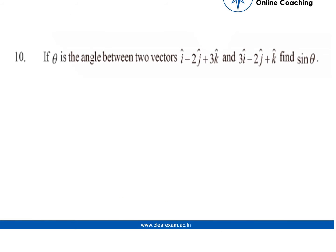Question 10. If theta is the angle between two vectors i cap minus 2j cap plus 3k cap and 3i cap minus 2j cap plus k cap, find sin theta.